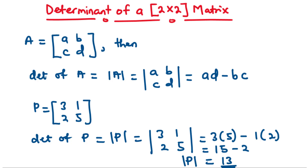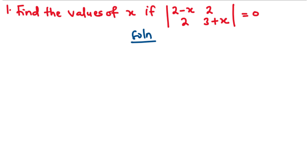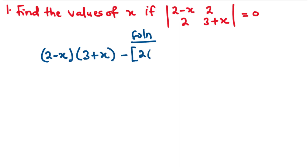Now let's solve some more examples. For example 1, find the value of X if the determinant of the matrix [[2 minus X, 2], [2, 3 plus X]] is equal to 0. So we have been told that the determinant of this matrix is equal to 0. We basically multiply 2 minus X by 3 plus X, and then subtract the product of 2 and 2. So we have (2 minus X)(3 plus X) minus 2 times 2, and that is equal to 0.